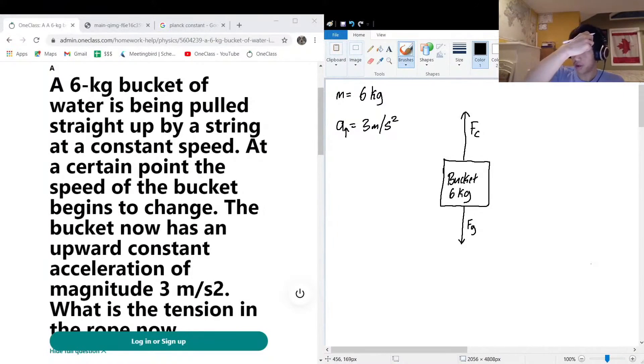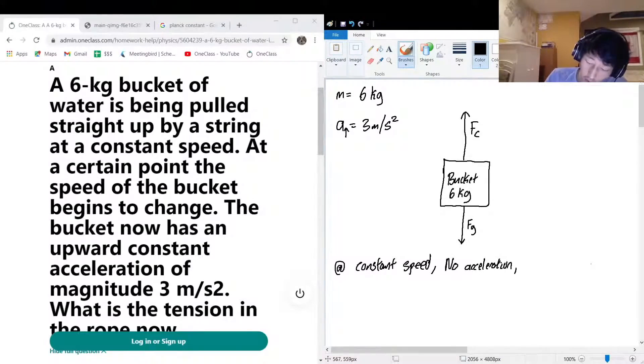Okay, so when it's moving at a constant speed, there's no acceleration—no net force—meaning that F_c equals F_g.